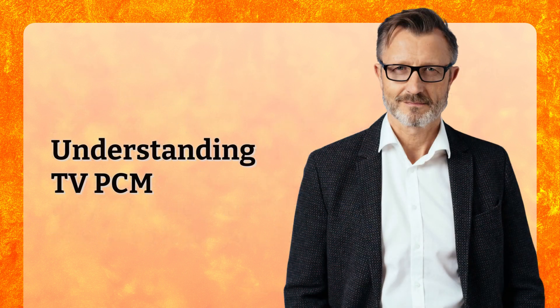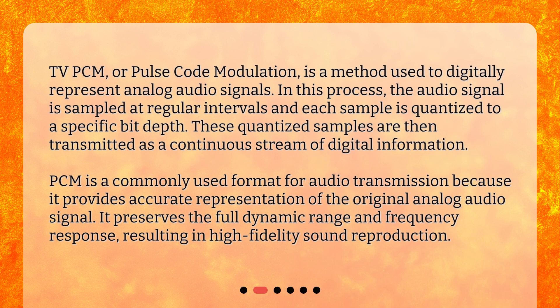Understanding TVPCM. TVPCM, or Pulse Code Modulation, is a method used to digitally represent analog audio signals. In this process, the audio signal is sampled at regular intervals and each sample is quantized to a specific bit depth. These quantized samples are then transmitted as a continuous stream of digital information. PCM is a commonly used format for audio transmission because it provides accurate representation of the original analog audio signal. It preserves the full dynamic range and frequency response, resulting in high-fidelity sound reproduction.